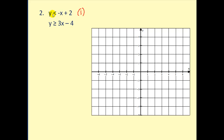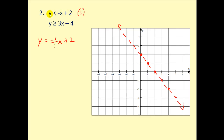Let's try another. We'll first graph y is less than negative x plus two, so we'll graph the line y equals negative one over one times x plus two, but it will be dashed. We plot our y-intercept. With a slope of negative one, we go down one and right one several times. Remember our line is dashed. Because this is solved for y, we can take the shortcut — it says y is less than, so less than means we shade below.